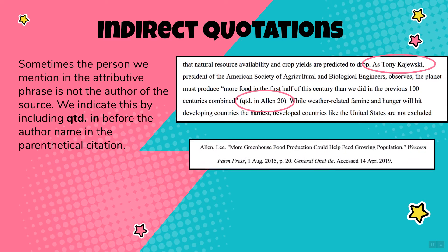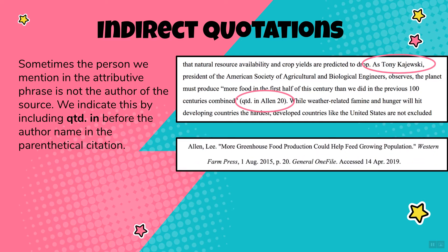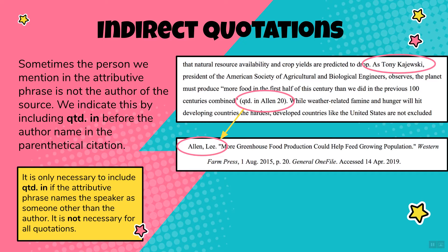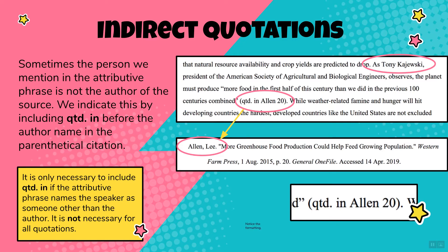But Kajewski didn't write the source — this information came from Lee Allen's work. So to make it clear to readers, you write 'qtd in Allen' in the parenthetical citation. Note that 'qtd in' is only necessary when the attributive phrase names a speaker other than the author; it is not required for all quotations. Also notice the formatting: the 'q' and the 'i' are lowercase, there's a period after the 'd,' and there is no other punctuation within the parenthetical citation.